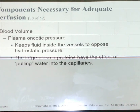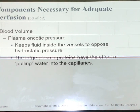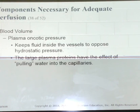Plasma oncotic pressure, also known as colloid oncotic pressure or oncotic pressure, is responsible for keeping fluid inside the vessels. A force is generated inside the vessels by large plasma proteins, especially albumin, that attracts water into the fluid. This is the opposite of hydrostatic pressure. Oncotic pressure exerts a pull inside the vessel. A high oncotic pressure would pull fluid from outside the vessel, through the vessel wall, and into the vessel.